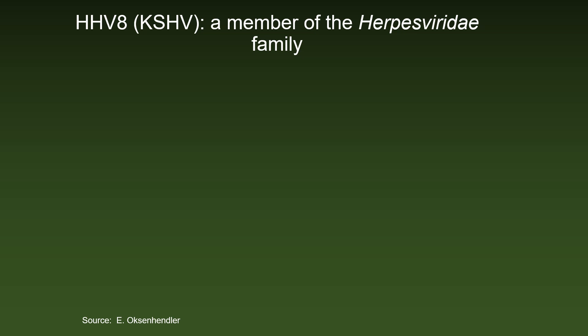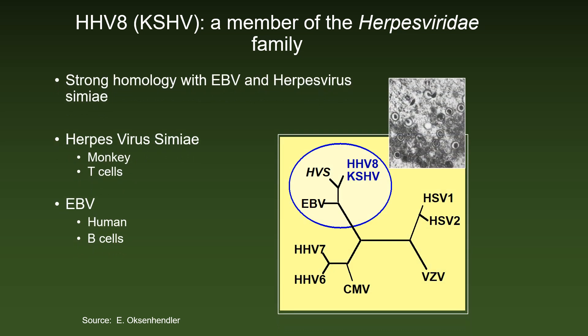Human herpes virus 8, HHV-8, is also called Kaposi's sarcoma herpes virus or KSHV. It has strong homology with Epstein-Barr virus and herpes virus simiae, but is only distantly related to herpes simplex virus or varicella zoster virus.